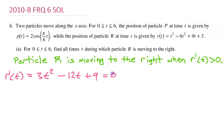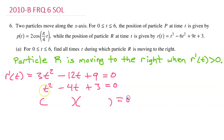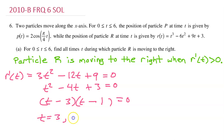Let's find where this velocity is equal to 0. All terms are divisible by 3, so dividing both sides by 3 gives t squared minus 4t plus 3 equals 0. We can factor this as (t minus 1)(t minus 3) equals 0. Using the zero product property, t equals 1 and t equals 3 are the two values where the velocity is 0.